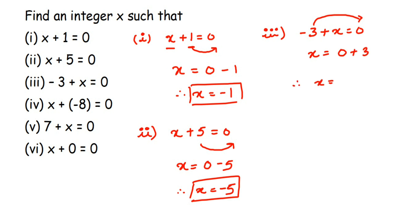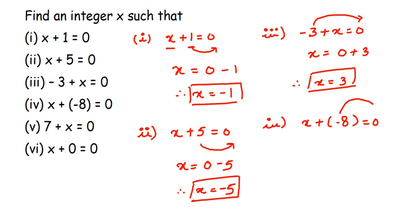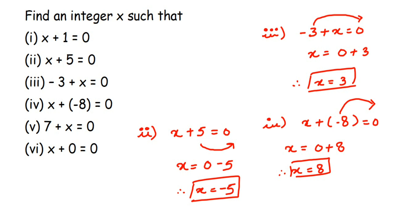The next equation is x plus minus 8 is equal to 0. We transpose minus 8 to the other side — negative becomes positive — giving 0 plus 8, which equals 8. Therefore, x is equal to 8.